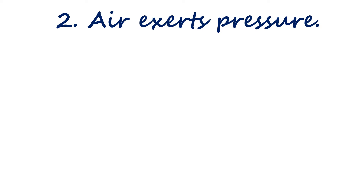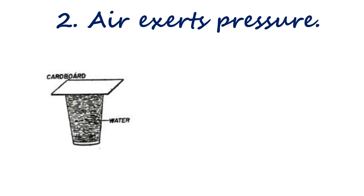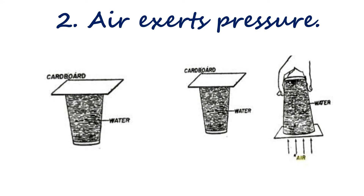The second one is air exerts pressure. Fill up the glass with water up to the brim and cover it with a cardboard piece. Now turn the glass upside down and slowly remove your hand. You observe the cardboard does not fall and the water stays in the glass. So you find that the air pushes the cardboard up and prevents it from falling.